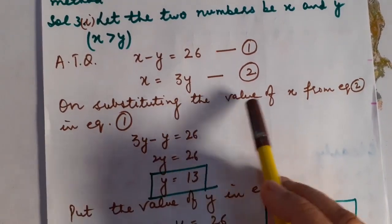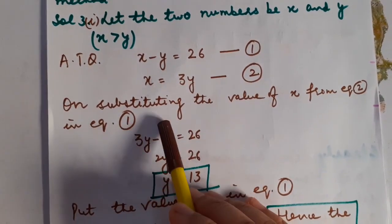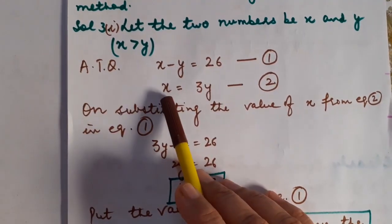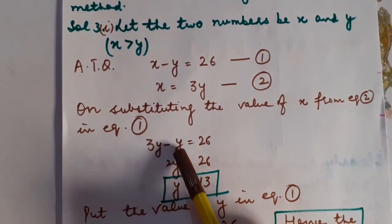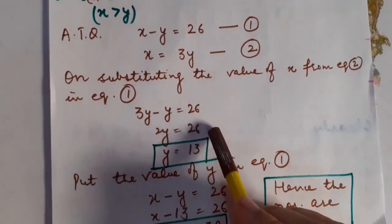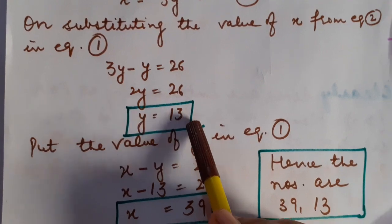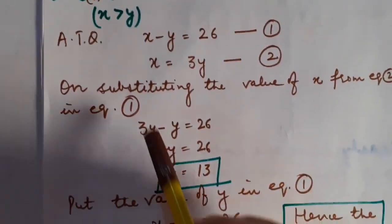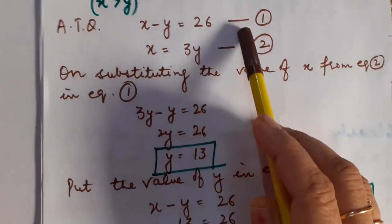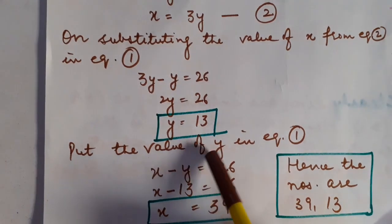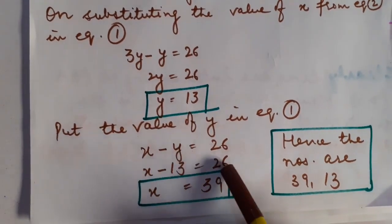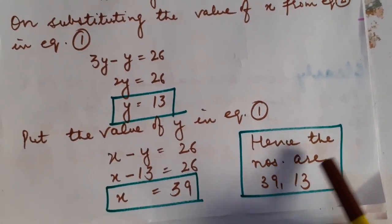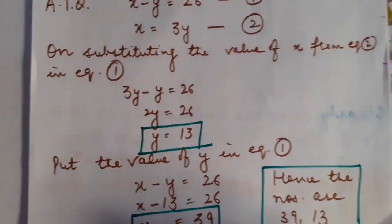On substituting the value of X from equation number 2 into equation number 1: X minus Y = 26 becomes 3Y minus Y = 26, so 2Y = 26, therefore Y = 13. Now, put the value of Y in equation number 1: X minus 13 = 26, so X = 39. Thus the required numbers are 39 and 13.